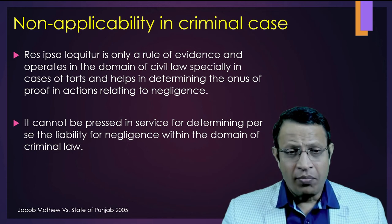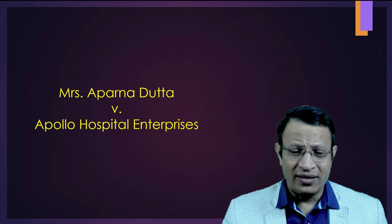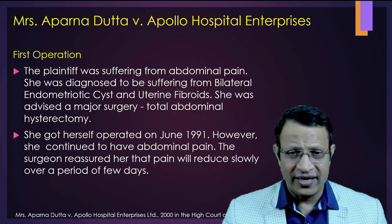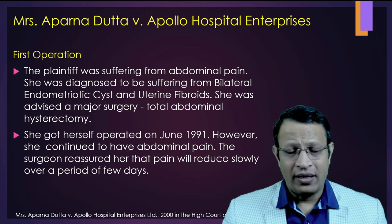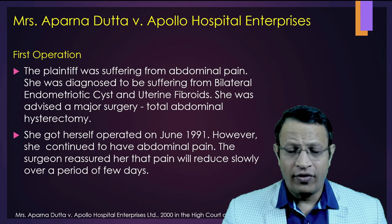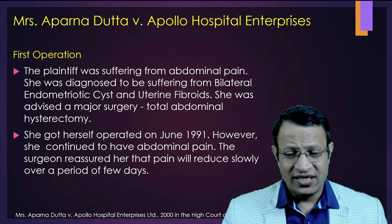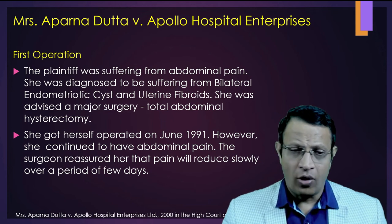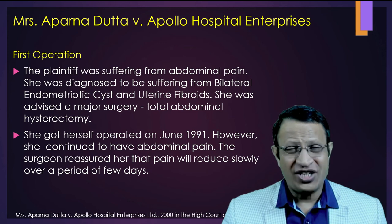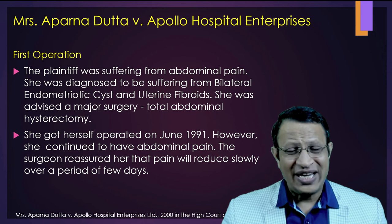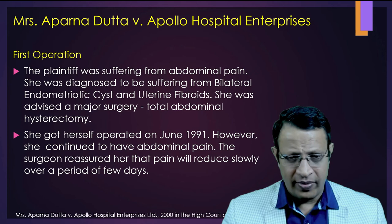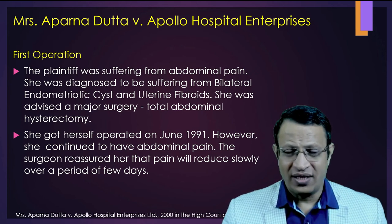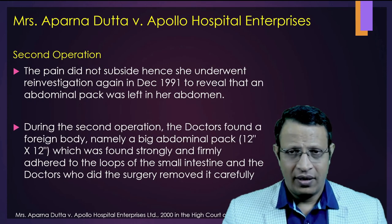Let's discuss the important case of Mrs. Aparna Datta versus Apollo Hospital Enterprises. The patient had been suffering from abdominal pain for many years and was diagnosed with an endometriotic cyst and uterine fibroids. Because of this pathology she had severe abdominal pain and was advised a major surgery — a total abdominal hysterectomy, meaning complete removal of the uterus through abdominal operation. She gave consent and was admitted to Apollo Hospital in June 1991. The operation was conducted and when she recovered she started complaining of severe abdominal pain, but the surgeon reassured her it was due to the surgery and would resolve over time.